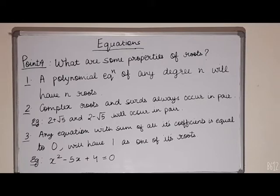Point 3. Any equation with sum of all its coefficients equal to 0 will have 1 as one of its roots. For example, x square minus 5x plus 4 equals 0 will have 1 as one of its roots.